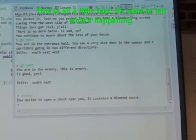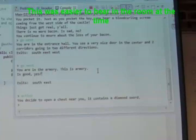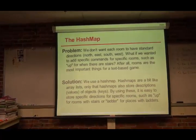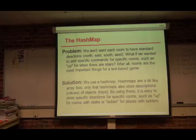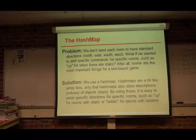You can get another weapon — you get a weapon from the chest. Our problem was we didn't want each room to have standard directions such as north, east, south, and west. What if we wanted to add specific directions for specific rooms, such as 'go up' when there are stairs? Our solution was to use a HashMap.